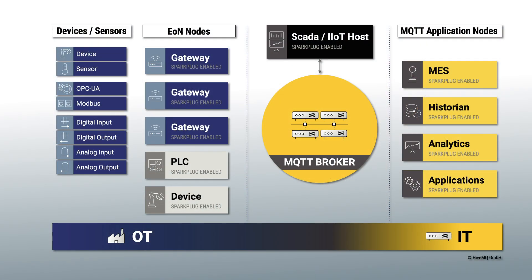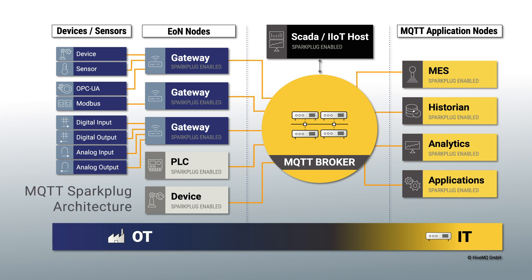With this decoupled architecture, all your components do not have point-to-point connectivity and do not use a poll-response approach. Instead, all specified devices — PLCs, gateways, and applications — are publishing data about their state and about the data themselves.